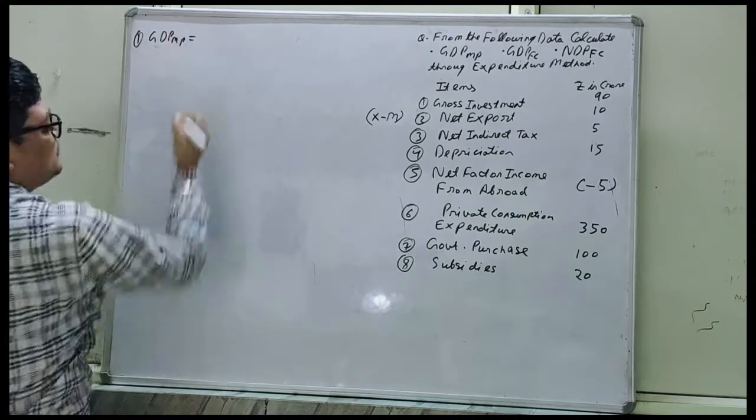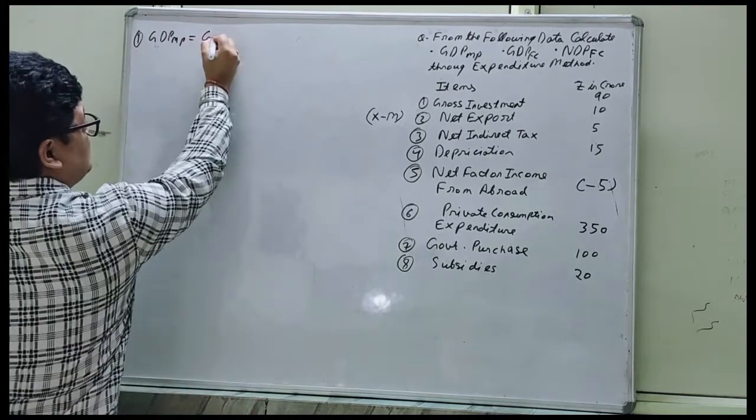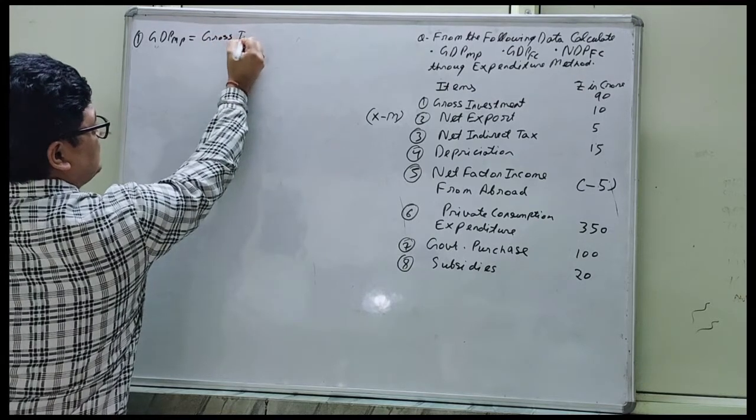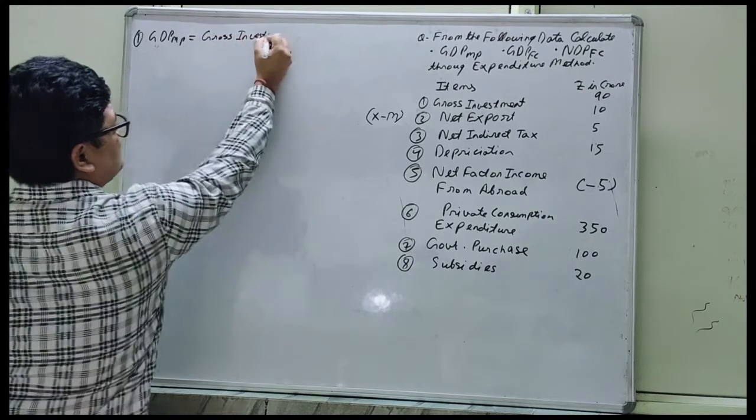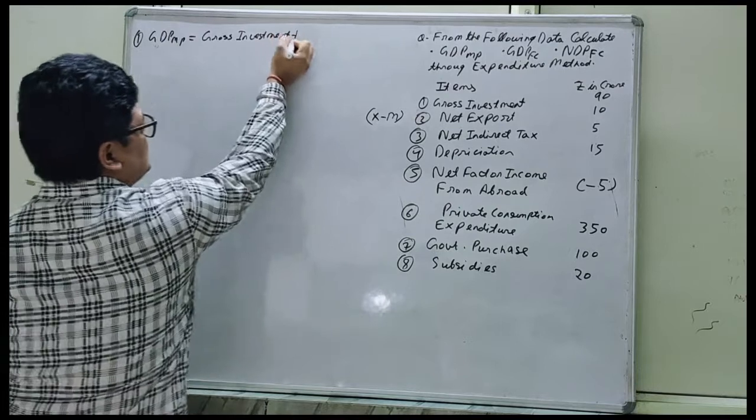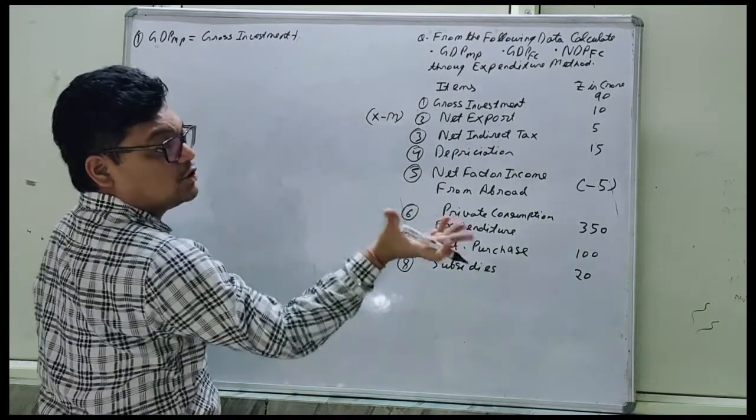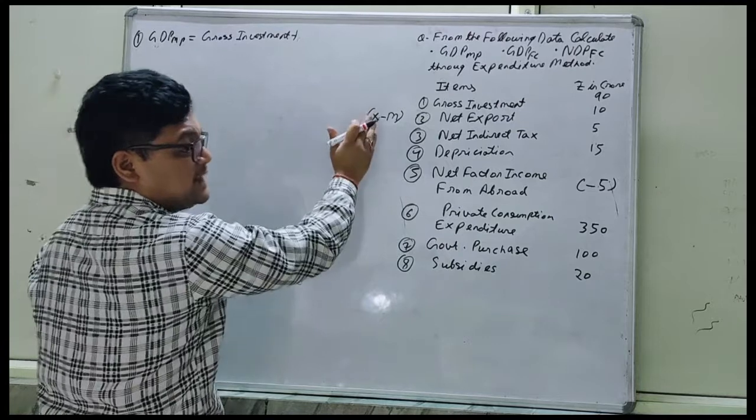So first of all we have to take all the gross items. First we will take gross investment plus net export, now we are having the gross amount after deducting export minus import.